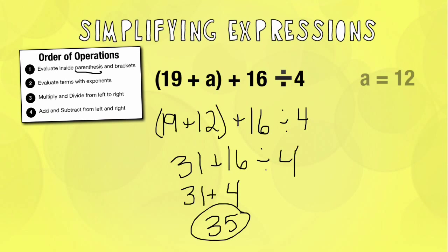Now, if I change a around, say maybe I change it to 10, that's going to change my answer by a couple. So it's all on whatever they're giving you the variable to be.